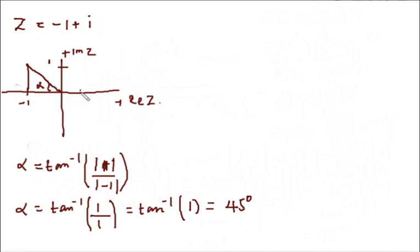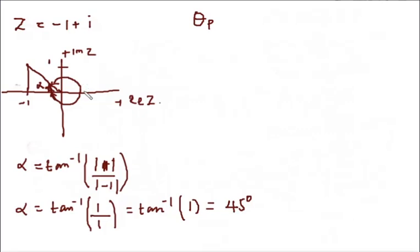We have the option of picking the argument from one direction or the other. To find the principal argument theta_p, we pick the one that is closer between these two options. Remember, if we are going from here in one direction, we are counting in the negatives, but going the other way is in the positives.